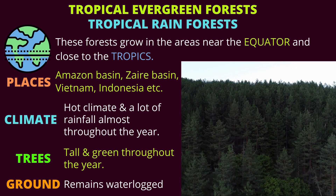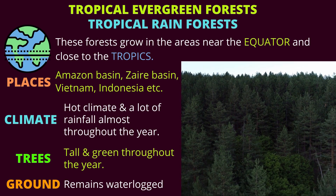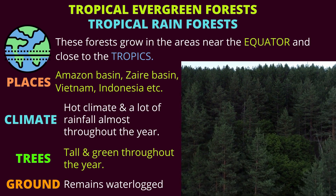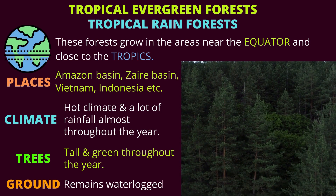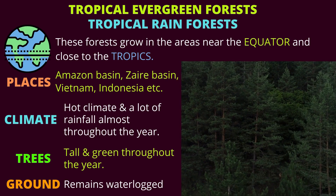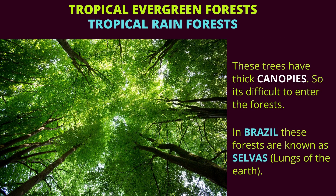What about the trees in these forests? The trees are tall and green throughout the year. The ground remains waterlogged. These trees have thick canopies. What is a canopy? Can you see a lot of trees? If you look carefully, you will see that the topmost branches and leaves are spread on top in such a way that it's difficult to see the sky.